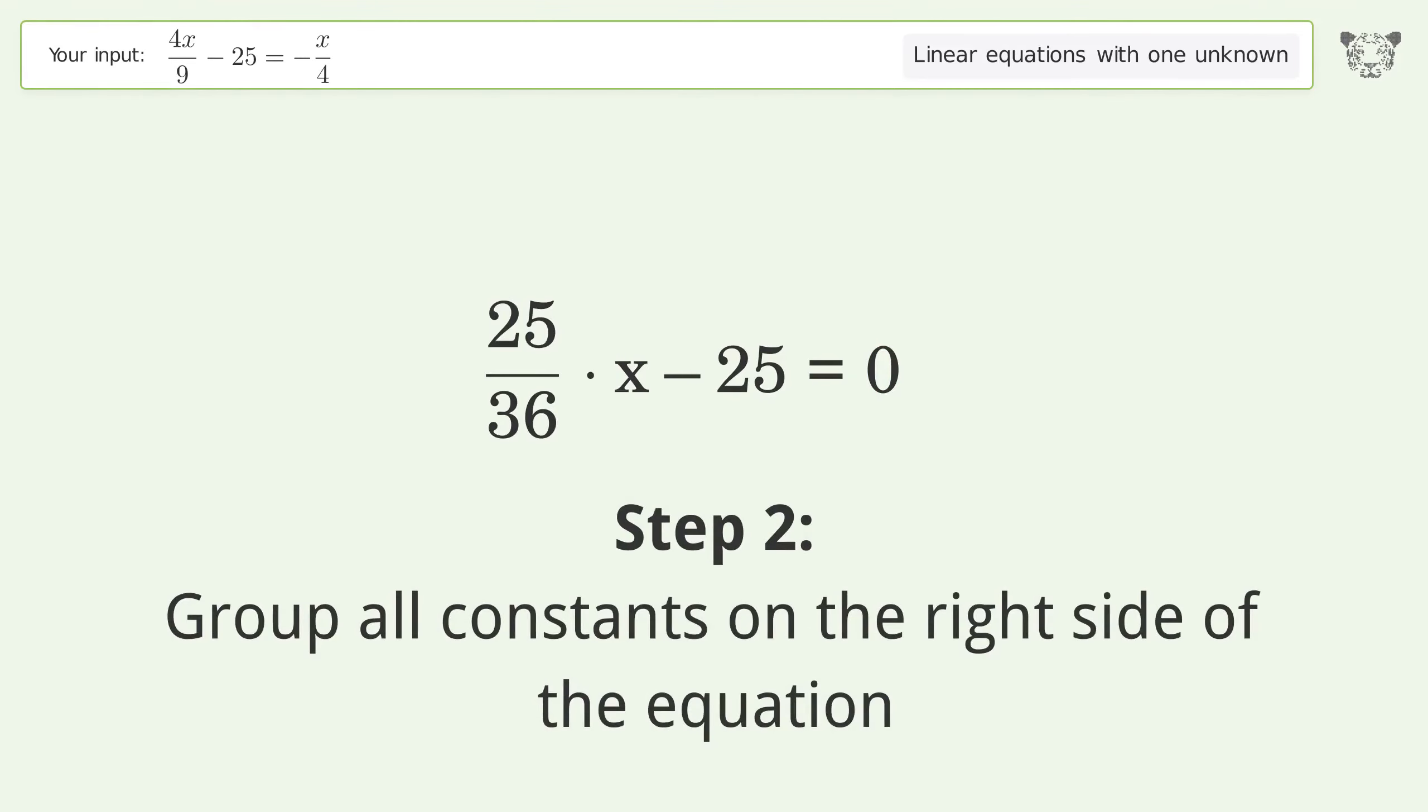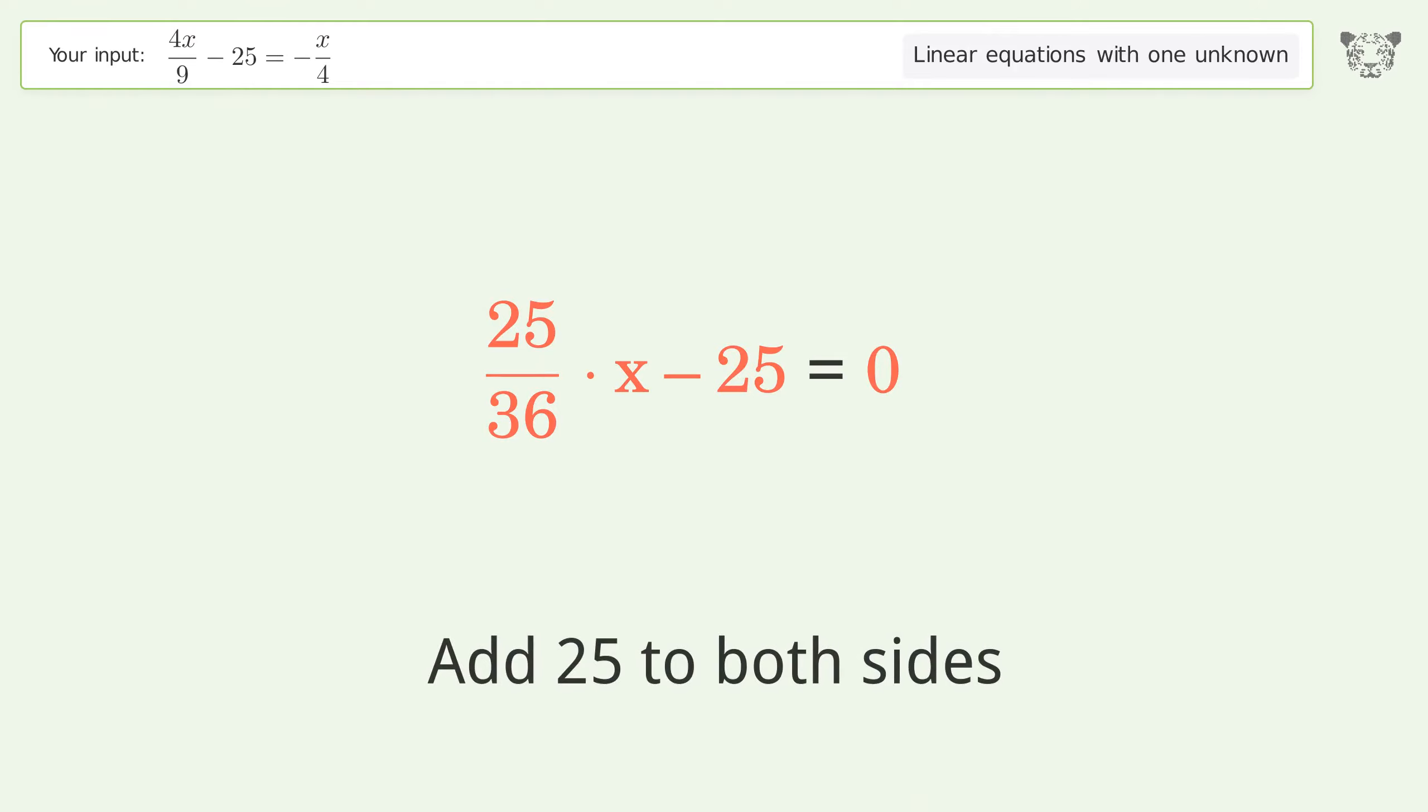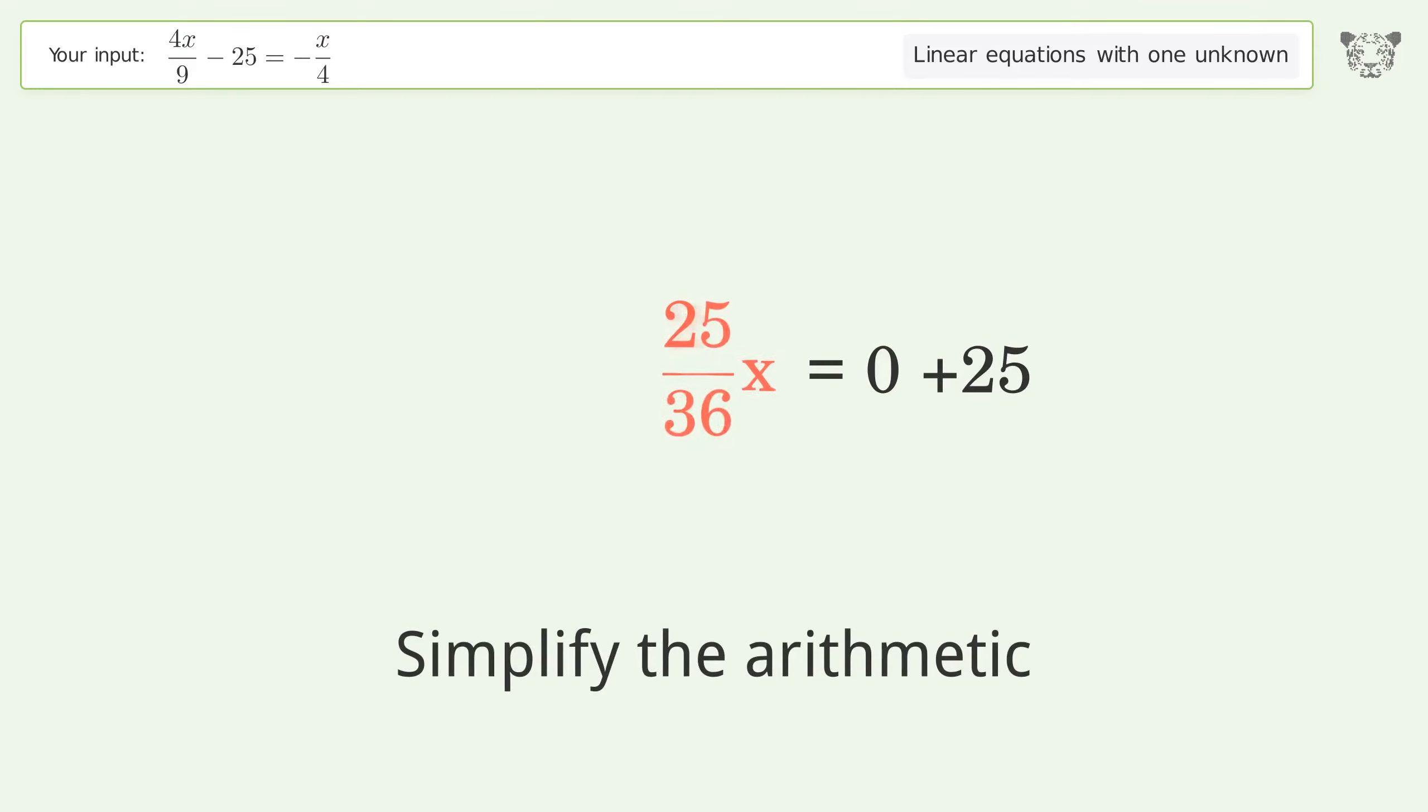Group all constants on the right side of the equation. Add 25 to both sides. Simplify the arithmetic.